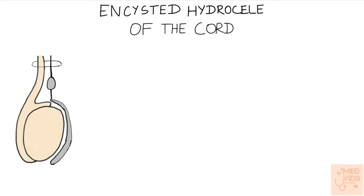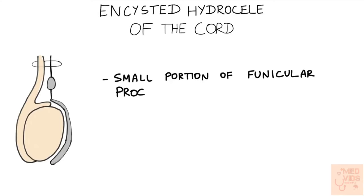Now we have encysted hydrocele of the spermatic cord. Here a small portion of the funicular process persists, leading to a small swelling in the spermatic cord, as seen in the picture. This swelling is freely mobile. There is a test called the traction test — if you gently pull the testis downwards and try to move the swelling, the movement of the swelling will be restricted. This traction test is positive in encysted hydrocele of the spermatic cord.